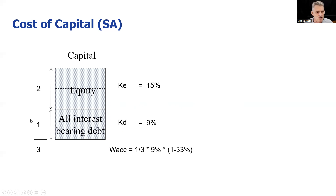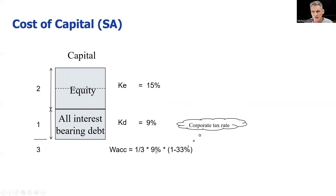Starting with the debt: we've got one third of our capital as debt. Debt costs us 9%. But — and this is the trick — we can multiply this by one minus 33%, which is the corporate tax rate. The reason for this is that the company pays 9% to the bank, but this interest that's paid is tax deductible, so the company actually saves tax on that. 100% minus 33% shows us the 66% that the company is actually paying.